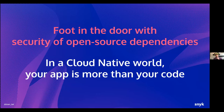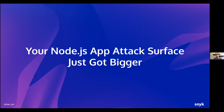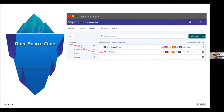We are transitioning into a cloud native world where your application is really more than your code. When we build cloud native applications, our application stack surface is more than just the base application code. Let's say you consistently scan your project repositories for security vulnerabilities — you're now aware of vulnerabilities from your code and your open source dependencies. But how do you know if you're not vulnerable to a new vulnerability released after you last scanned? You actually need to monitor the project continuously, because new vulnerabilities keep coming up.